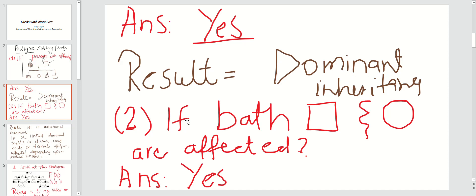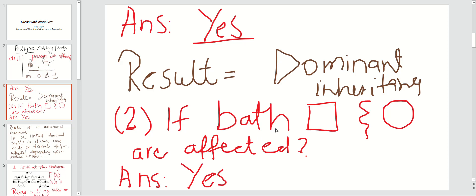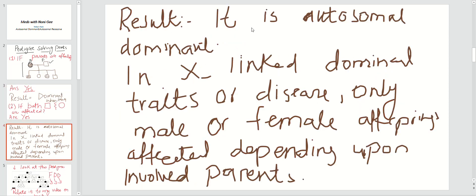The next point you will see in the pedigree is whether both male and female offspring are affected. Going back to this pedigree — mother is affected, yes parents are affected. Then I look at the offspring: you can see there is a male who is affected and a female who is affected. So both male and female are involved — my answer will be that I am dealing with autosomal dominant inheritance.